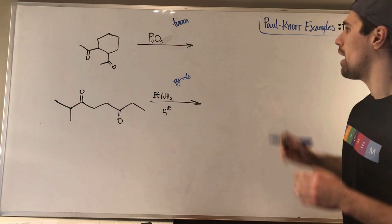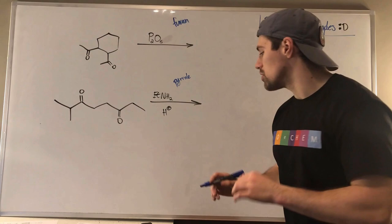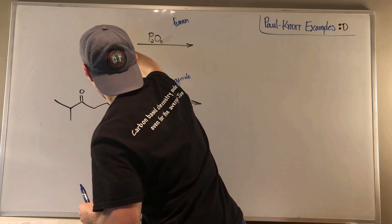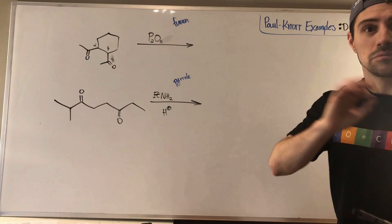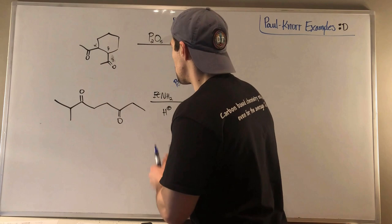In this first one, we're clearly going to make some furan derivative. And in this one, we're going to make some pyrrole derivative. But let's check out this one first. Remember, this reaction is key on having a gamma-dicarbonyl. So, what I always like to do is I look at my structure, I identify one carbonyl, and I go, okay, there's the alpha position, there's the beta position, and bingo, bango, bongo, there's the gamma. Gamma-dicarbonyl, clear as day.